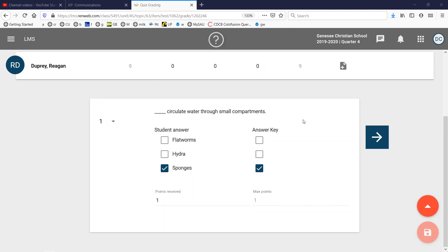Alright, let's take a couple minutes and go over last Friday's quiz. Let's see. What circulates water through small compartments? That would be sponges.